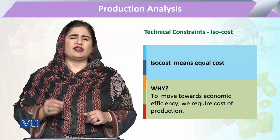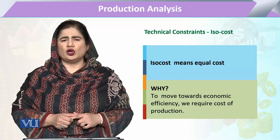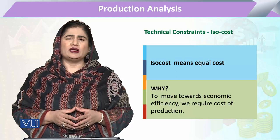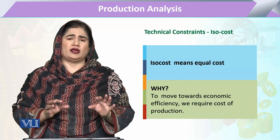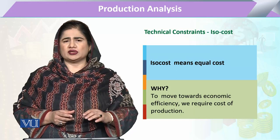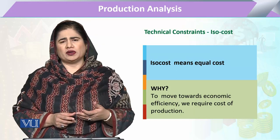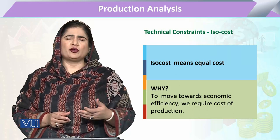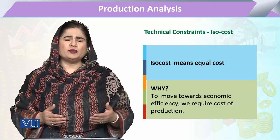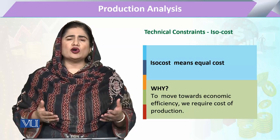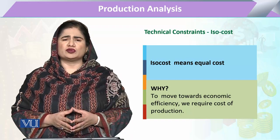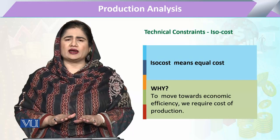جس طرح ہم نے output کے لئے fix کیا تھا کہ وہ same level of output ہو، اسی طرح یہاں entrepreneur وہ various combinations pick کرے گا جس کے لئے وہ چاہتا ہے کہ اس کی cost same رہے۔ یہاں duality کے concept کے تحت، entrepreneur output maximization کے بجائے چاہ رہا ہو کہ اپنی cost کو fix رکھے — تو وہ تمام combinations of inputs لے گا جس پہ اس کی لاگت same رہے۔